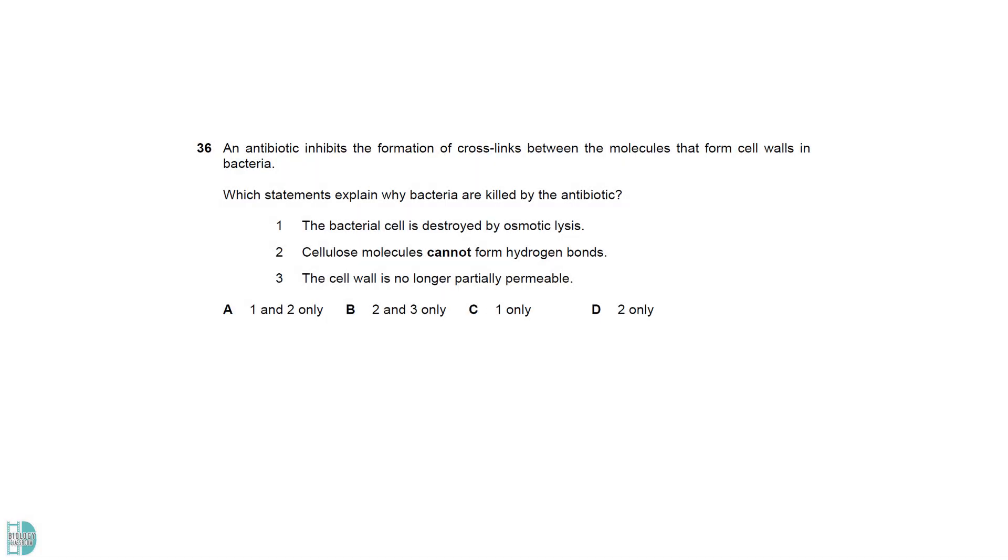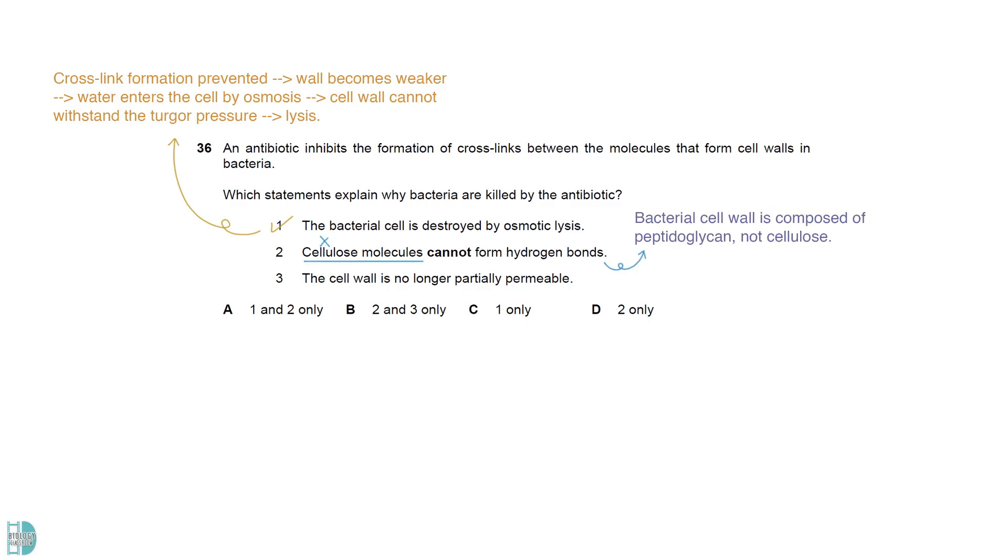One is correct. When crosslink formation in the cell wall is prevented, the wall becomes weaker. When water enters the cell by osmosis through the plasma membrane, the cell wall cannot withstand the turgor pressure and lyses. Two is wrong because the bacteria cell wall is composed of peptidoglycan, not cellulose. Three is wrong because the cell wall is fully permeable. Only the cell surface membrane is partially permeable.